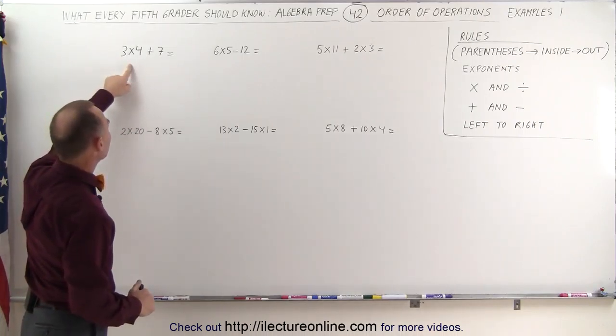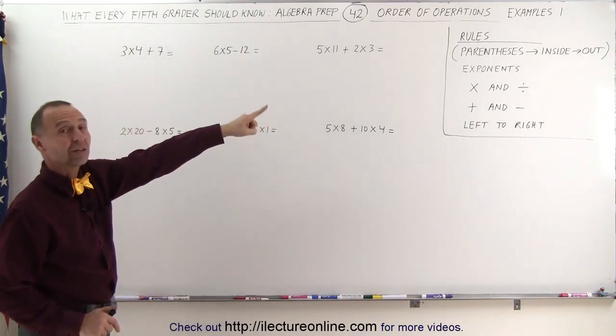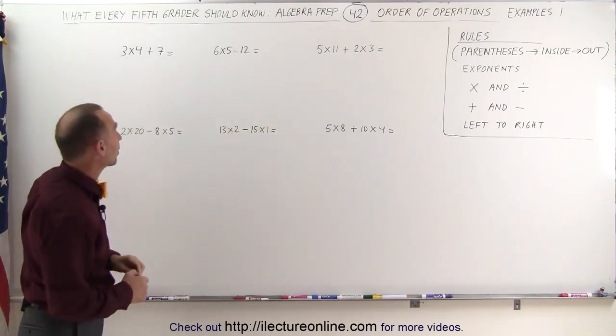Looking at the first one, you see I have a multiplication here and another addition. The rule says that multiplication and division comes before addition and subtraction.